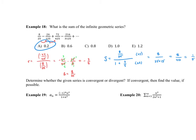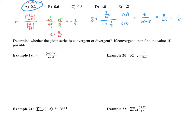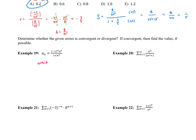Now we determine convergence or divergence for the remaining examples, and if convergent, try to find the value. Example 19 needs to wait — this is the alternating series test, which is test number seven, covered in section 8.4. We have to get there before we can do this problem.